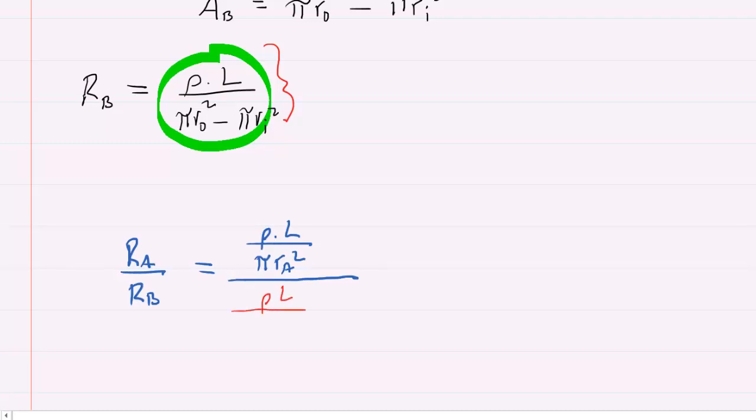This is a complex fraction. We can do what I like to call keep, change, flip. So you're going to keep this first fraction in the same orientation. So rho L over pi r sub A squared. You're going to change division to multiplication and then you're going to flip this fraction upside down essentially. So you'll have pi outer radius squared minus pi times inner radius squared and that will be all divided by rho L.